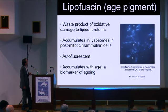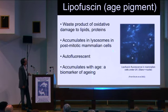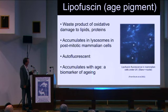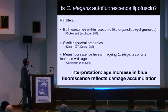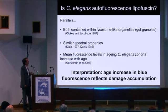This fluorescence has for a long time been equated with mammalian age-pigment, or lipofuscin. In mammals, lipofuscin is well characterized — it's a product of molecular damage, an aggregate of varying composition, mainly lipids and proteins, particularly thought to be caused by oxidative damage. It accumulates within lysosomes, particularly in post-mitotic mammalian cells, and it's also autofluorescent with blue fluorescence. The mammalian lipofuscin work led to the suggestion that the C. elegans blue fluorescence is lipofuscin, and there are good reasons for this — both are contained in lysosome-like organelles.